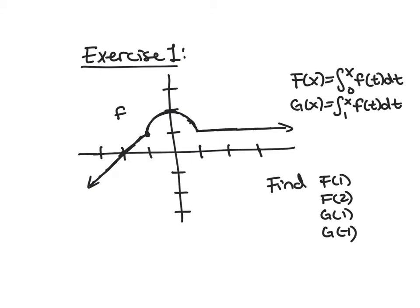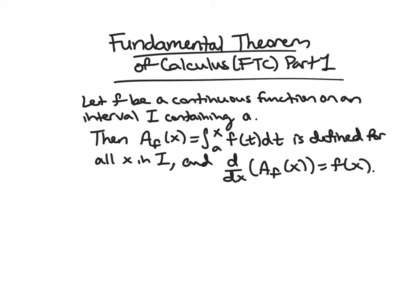For your first exercise, look at the graph below — which includes a semicircle and straight lines. I've defined two area functions: big F from 0 to x, and big G from 1 to x. Compute four values for these functions, paying careful attention to the last one where we go to negative 1 — think carefully about which direction you are going.